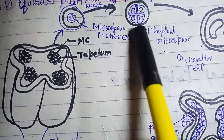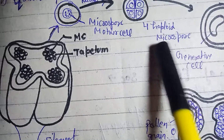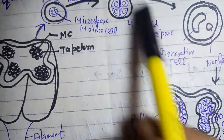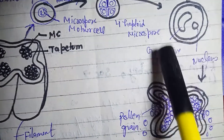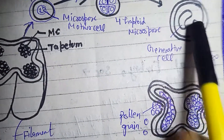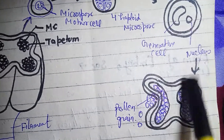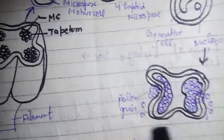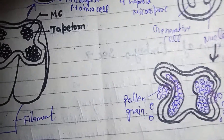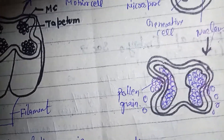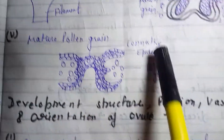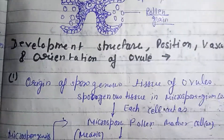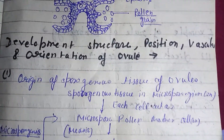After meiosis division, we get tetrads of haploid microspores. Then we have generative cell and nucleus cell formation, and the pollen grains will mature and be released. Development of structure, position, vascular orientation in the ovule — this is the sporogenous tissue of the ovule.